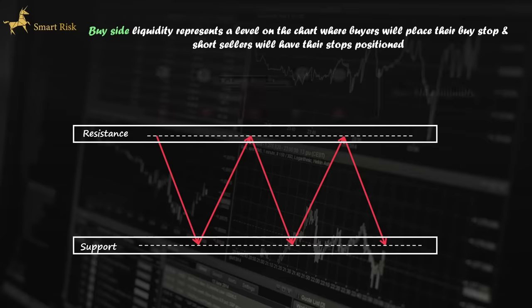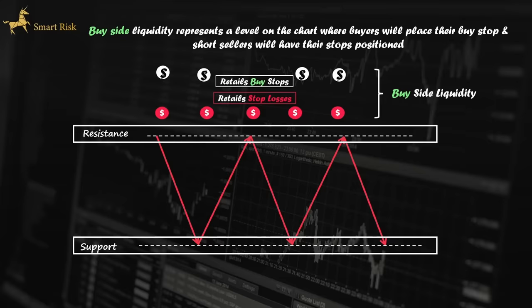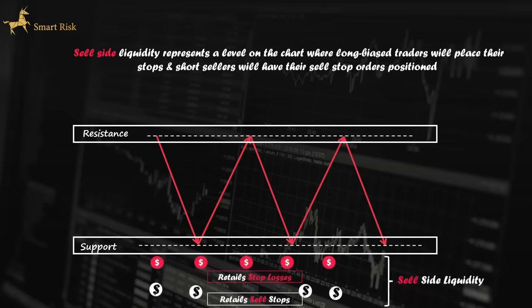Buy-side liquidity represents a level on the chart where buyers will place their buy-stop orders and short sellers will have their stops positioned — and it is going to be on the buy-side of the chart. Sell-side liquidity is just the opposite: it represents a level where long buyers will place their stops and short sellers will have their sell-stop orders positioned, on the sell-side of the chart.